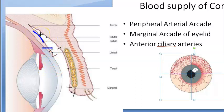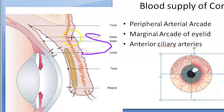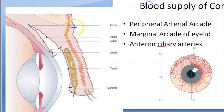Coming to the lymphatics of the conjunctiva - the lymphatics are arranged into two layers: the superficial layer and the deep layer. So you have two layers - superficial and deep.